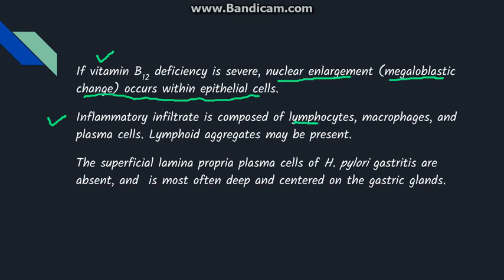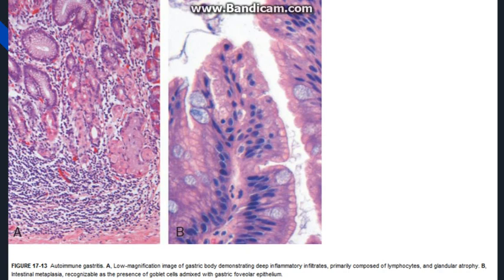The inflammatory infiltrate in autoimmune gastritis consists mostly of lymphocytes, macrophages, and plasma cells, with fewer neutrophils. Lymphocytes can be so numerous that lymphoid aggregates may form. In contrast to H. pylori gastritis — where plasma cells are present in the superficial lamina propria — in autoimmune gastritis the plasma cells and lymphocytes are located deep, centered on the gastric glands. In this histology image, dense lymphoid infiltrate and characteristic glandular atrophy can be seen.